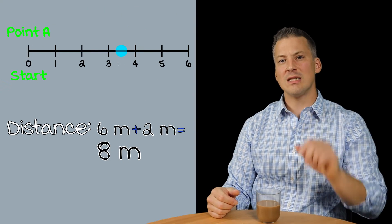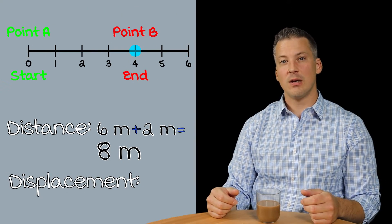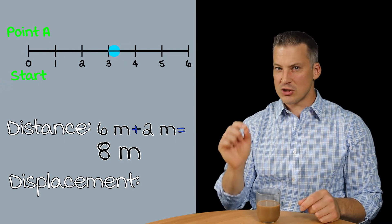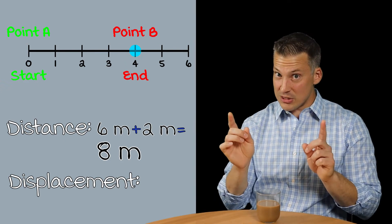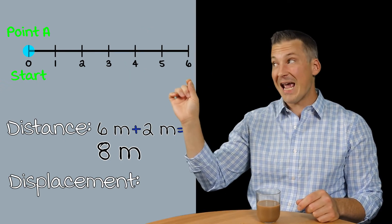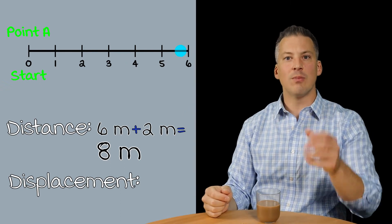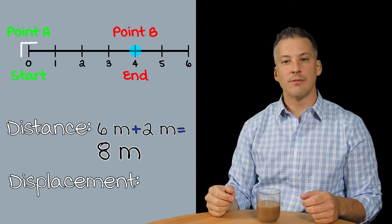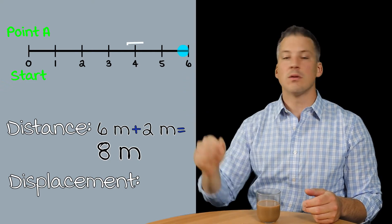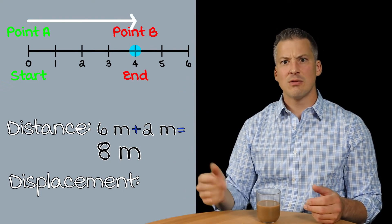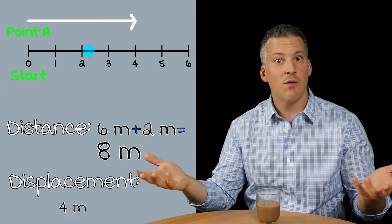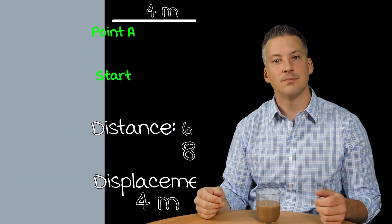But now what's the displacement of that ball? Remember, displacement is measured as the straight line length or the difference in position between the start point and the end point. So where did the ball start? It started at zero. Where did the ball end? It ended at four. So what's the length between zero and four? It's simply four. Four units.